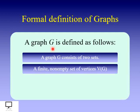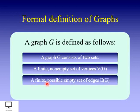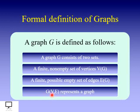Graph G is represented with a variable G and is defined as consisting of two sets. Both sets are finite sets. The first set is non-empty — it must have at least one vertex. The second set is a finite set of edges, but it can be empty. Even if only a vertex is present with no connections, it is still called a graph. The combination of a set of vertices and a set of edges represents graph G.